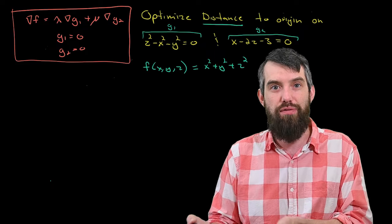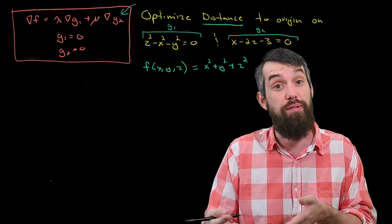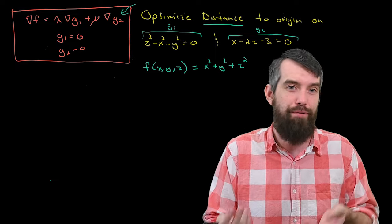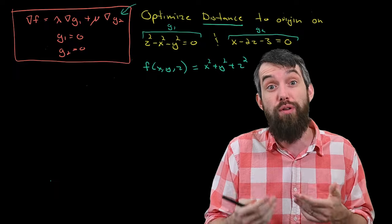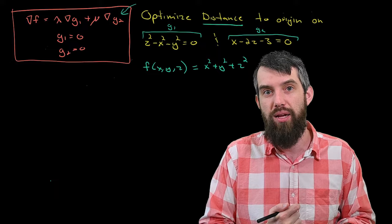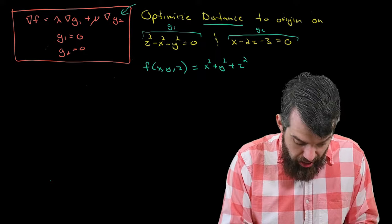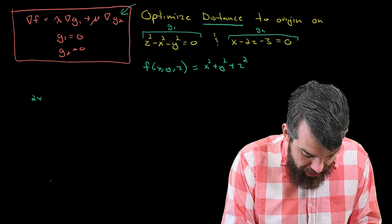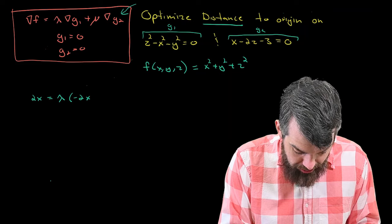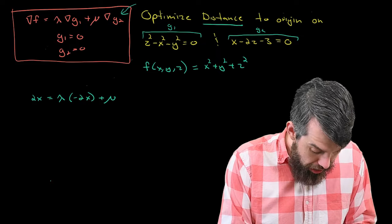Now I plug everything into the formula: the gradient of f equals lambda times the gradient of g1 plus mu times the gradient of g2. This is a vector equation with three components. The first equation, taking the partial with respect to x, gives 2x equals lambda times minus 2x plus mu. The second equation, partial with respect to y, gives 2y equals lambda times minus 2y. The third equation gives 2z equals lambda times 2z plus mu times minus 2.